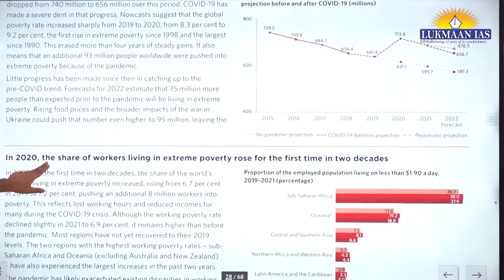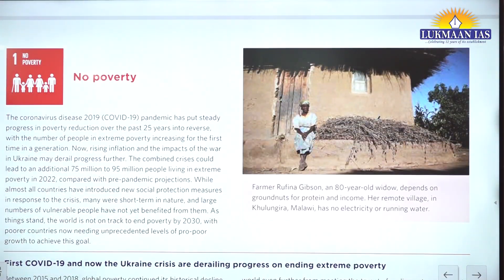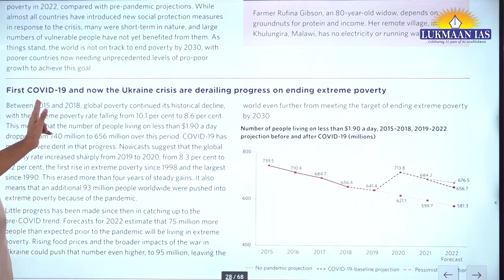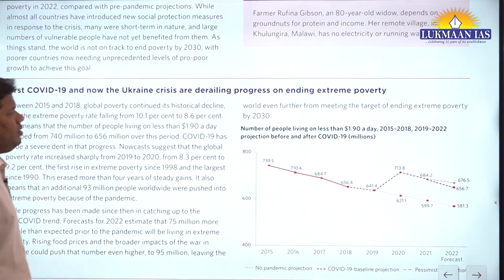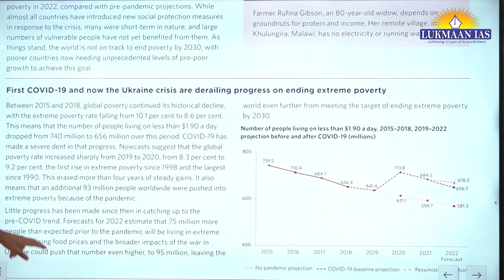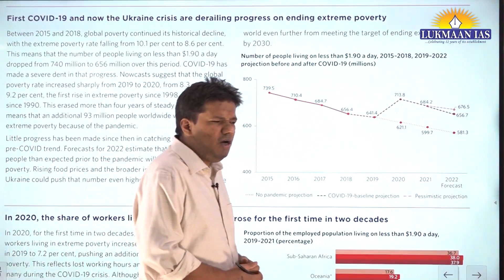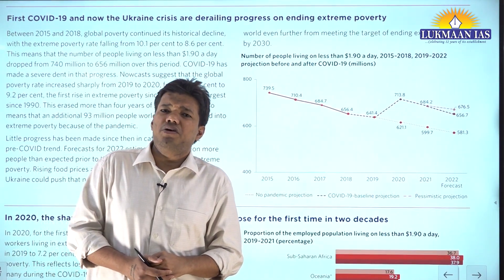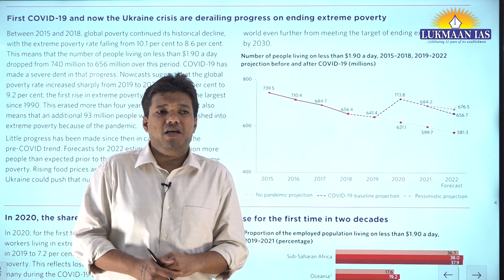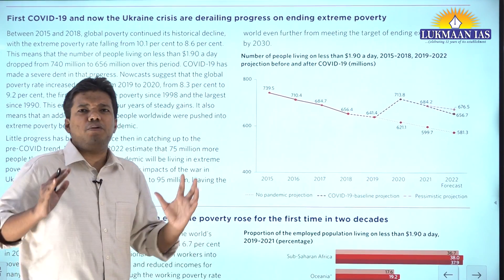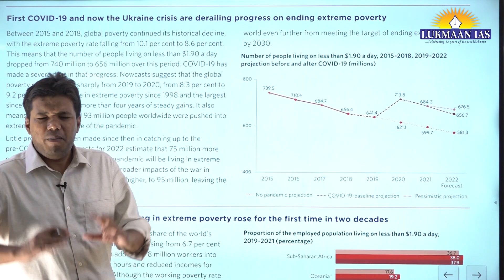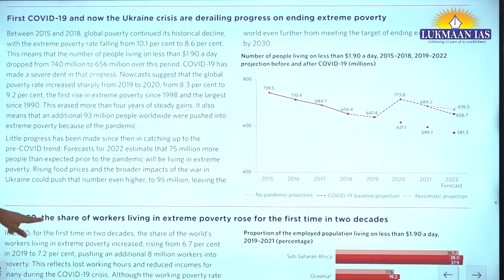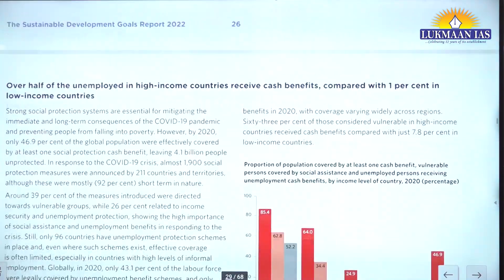On every goal - for example goal number one on poverty - they talk about what we did in 2020, whether we're making progress, and what happened during the COVID and Ukraine crisis. When you're talking about poverty, you cannot let go of the work of Professor Jeffrey Sachs, Professor Amartya Sen's capability approach. When you read the works of Professor Angus Deaton, you understand poverty deeply - and then even these reports feel very light.